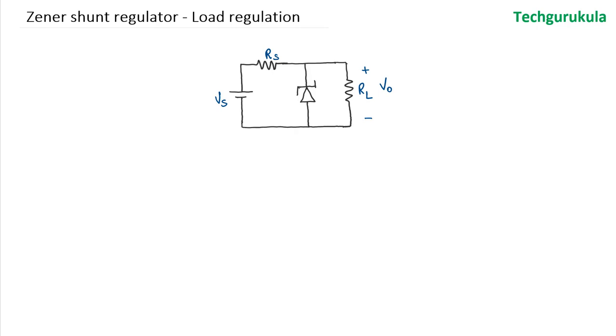In the previous video we have seen how a zener diode can be used as a voltage regulator, but there we have seen it without the load resistor. But in reality we always have load connected to it. So here we are seeing the circuit with the load resistor.